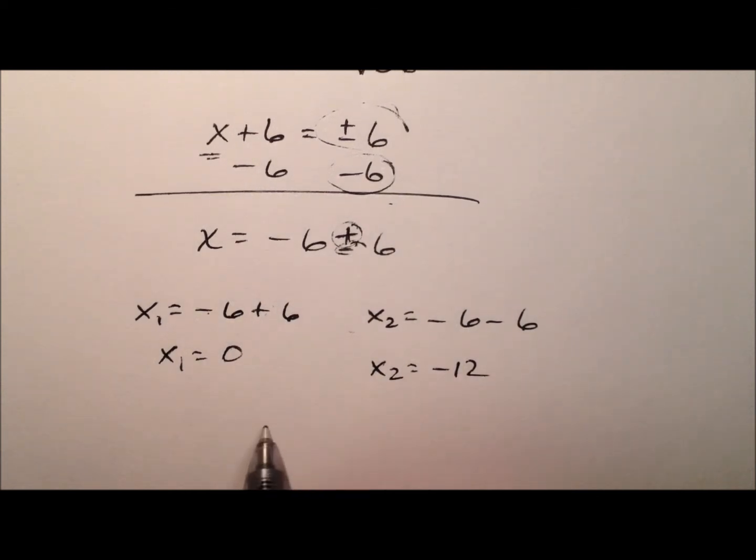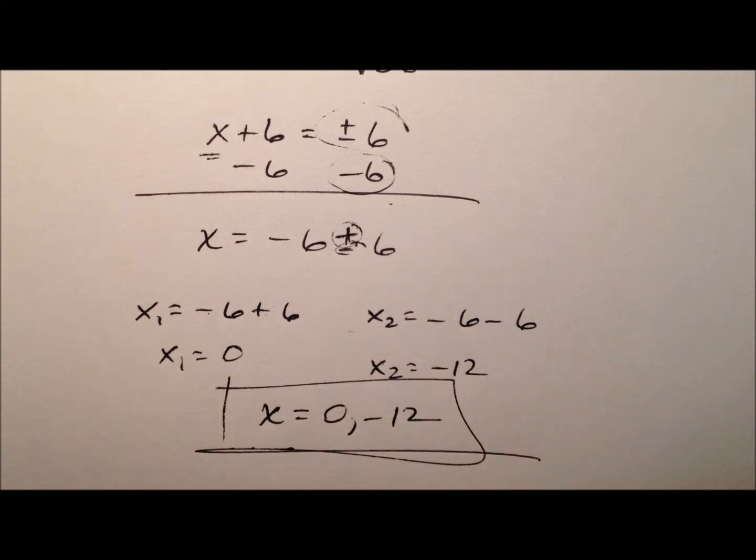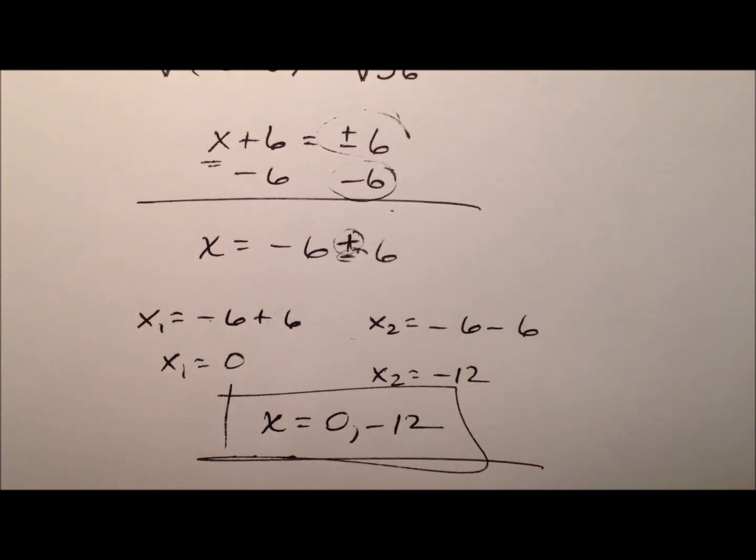We can generalize this by saying now my x values are 0 and negative 12. And these are the two solutions for my equation.